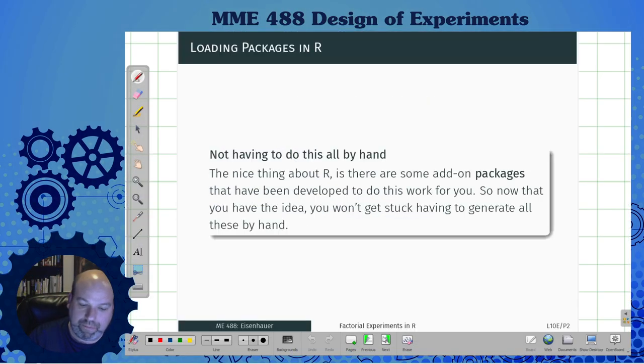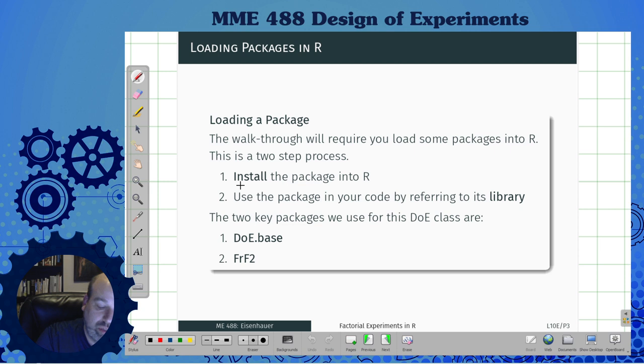So a factorial experiment in R. We're not going to want to do this all by hand. In R, there's always a package to do pretty much anything. So we're going to have to load a new package. You have to install it, then you have to use it by referring to its library. You do this once, and you do this every time you start R.